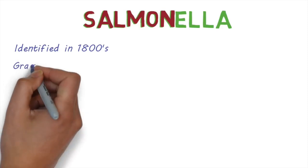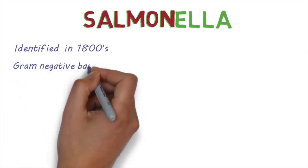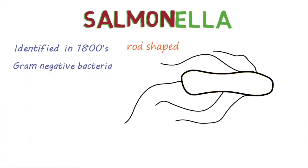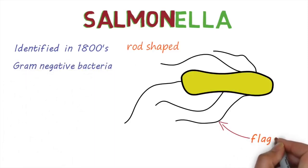Salmonella belongs to a group of bacteria called Gram-negative bacteria. They're shaped like rods and can have flagella to help them move around.